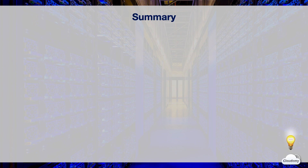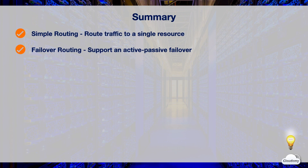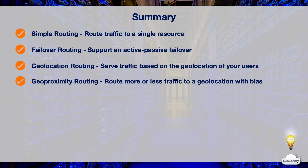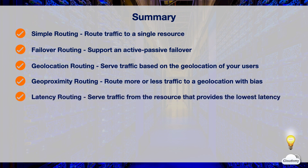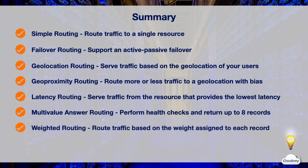In this episode, we've learned different Route 53 routing policies. Simple routing lets you configure standard DNS records and route traffic to a single resource. Failover routing lets you create an active-passive failover for your resources. Geolocation routing lets you choose resources that serve traffic based on the geographic location of your users. Geoproximity routing lets you route traffic based on the geoproximity of your users and resources, with options to route more or less traffic by specifying a bias value. Latency-based routing helps serve traffic from the resource that provides the lowest latency. Multi-value answer routing lets you configure Route 53 to perform health checks and return up to 8 healthy records. Weighted routing lets you route traffic based on the weight assigned to each record. That's all for Route 53 routing policies. Thanks for watching and see you in the next episode.